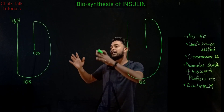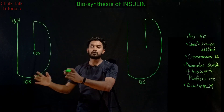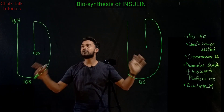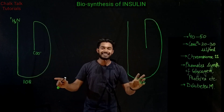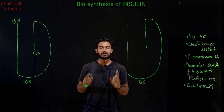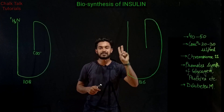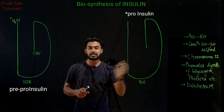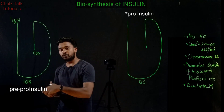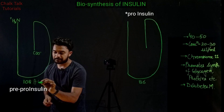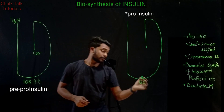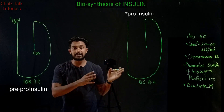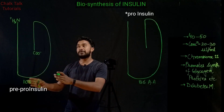Before moving to the next part, we need to understand the structure of the two precursors of insulin biosynthesis. In insulin production we have two precursors: pre-pro-insulin and pro-insulin. Pro-insulin contains 108 amino acids, and pre-insulin contains 86 amino acids in its peptide chain.